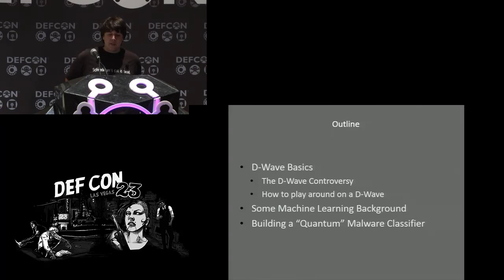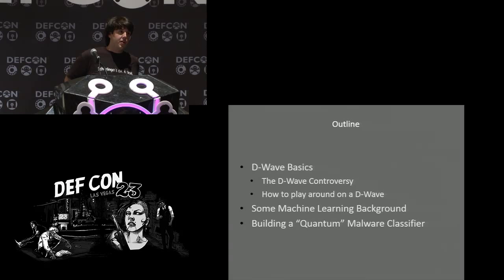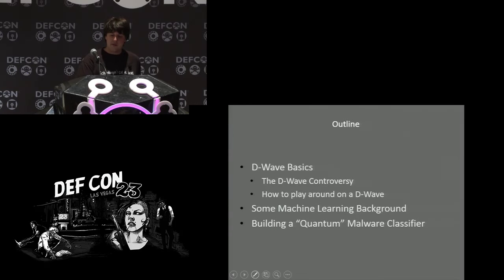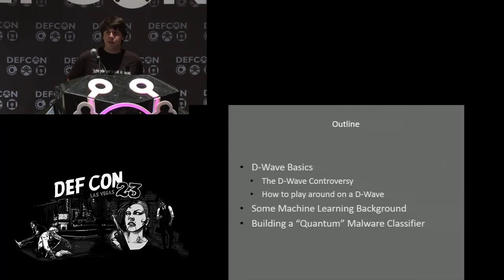I've broken the talk today into a few major segments. First, I'm going to talk about the current state of the D-Wave and D-Wave controversy and what working with one actually looks like. Then we'll switch gears into the machine learning background necessary to understand how a D-Wave classifier works. Finally, I'll segue into our design choices and implementation details of actually getting a malware classifier onto the D-Wave 2 instance that my university has access to, and wrap up with interesting observations and where further research might be useful.